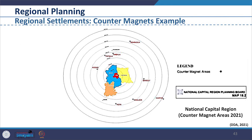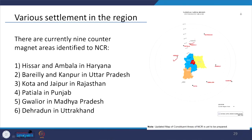For example, the NCR Planning Board under the NCR Planning Board Act 1985 Section 8F selected counter magnets outside the NCR based on location, population, and potential for growth in consultation with state governments. There are currently nine counter magnet areas identified for NCR: Hisar and Ambala in Haryana, Bareilly and Kanpur in Uttar Pradesh, Kota and Jaipur in Rajasthan, Patiala in Punjab, Gwalior in Madhya Pradesh, and Dehradun in Uttarakhand. These magnets allow diversion of population away from the NCR region.